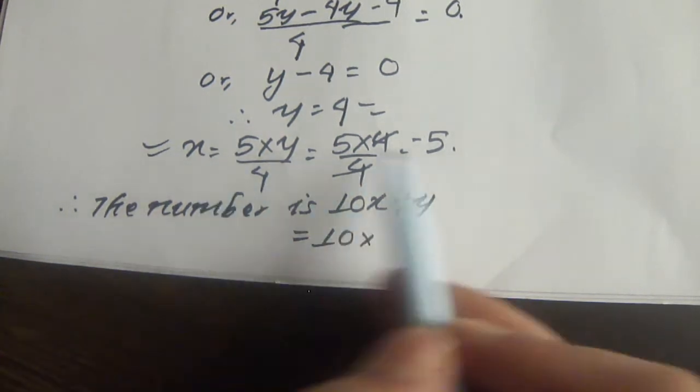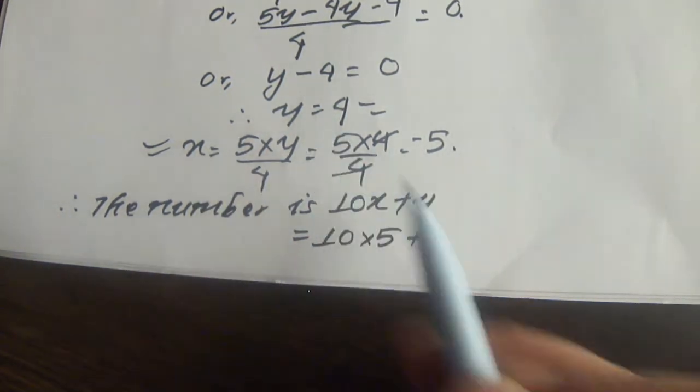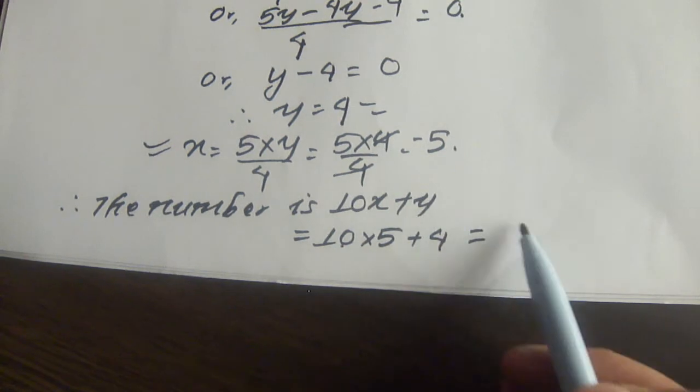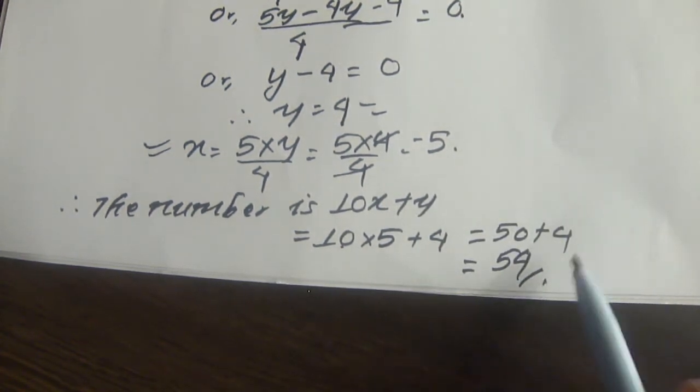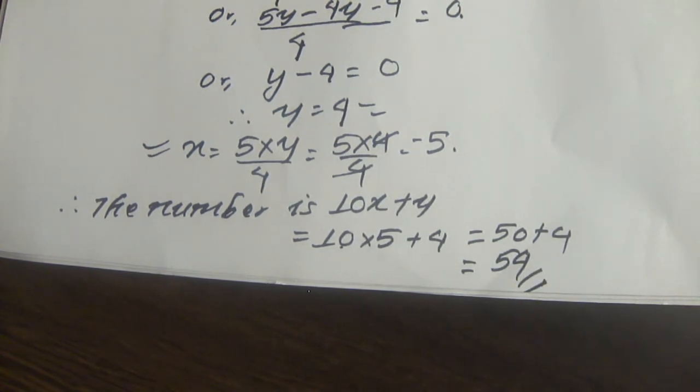Therefore, the number is 10x plus y, which is 10 times 5 plus 4, equals 50 plus 4, equals 54. This is the required number.